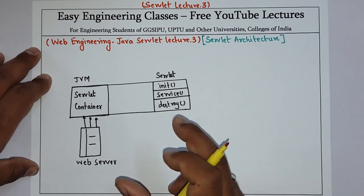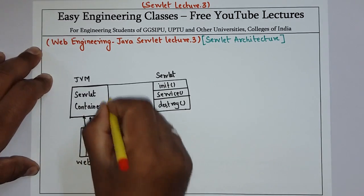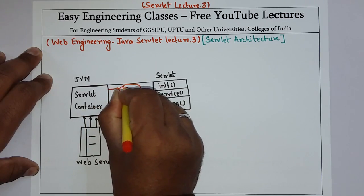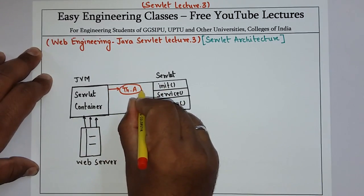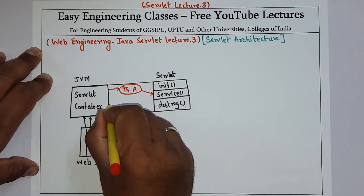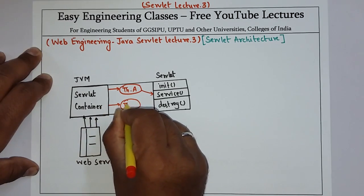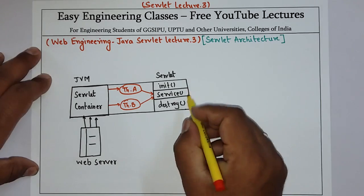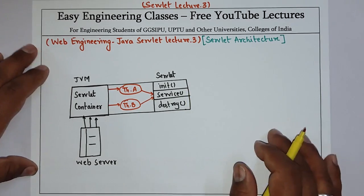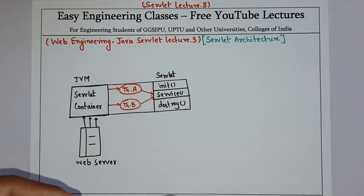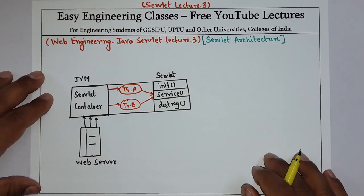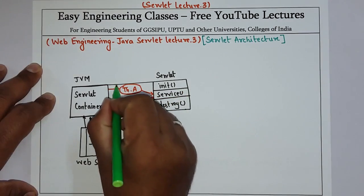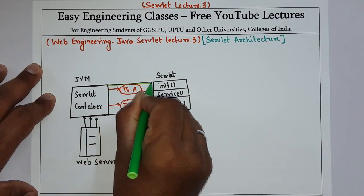Instead, different threads are created for each request. For each request, a thread is created — suppose thread A — and these threads will call the service method. Suppose this is thread B, which will again call the service method. The service method, depending on the request type of HTTP, calls further the doGet or doPost method. The init and destroy methods are directly called by the servlet container.